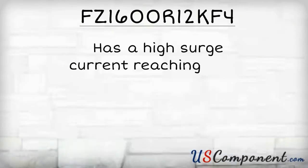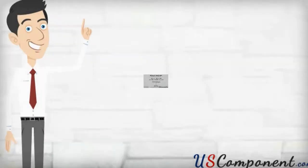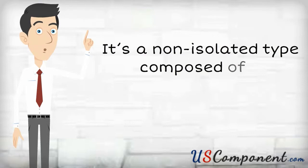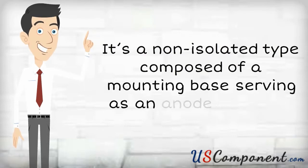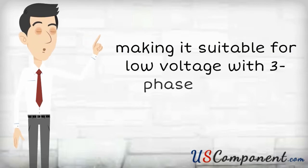FZ1600R12KF4 has a high surge current reaching up to 1200 amps or 60 hertz. It's a non-isolated type composed of a mounting base serving as an anode terminal, making it suitable for low voltage with 3-phase rectifier applications.